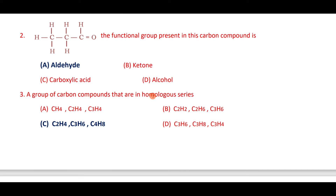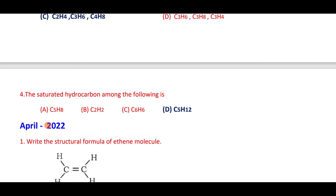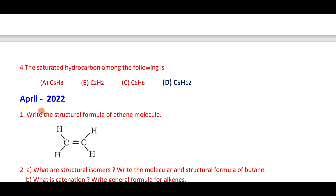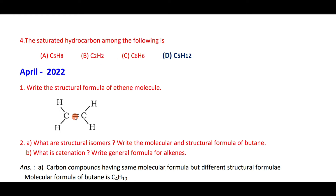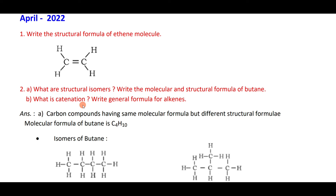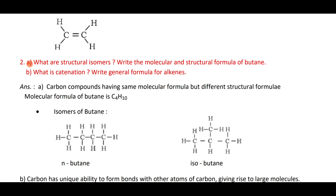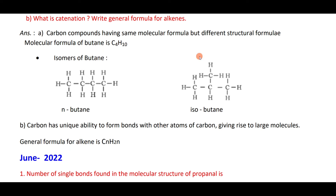In a homologous series, the difference between successive members should differ by CH₂ — option C. Catenation: carbon has a unique ability to form bonds with other atoms of carbon, giving rise to large molecules. The general formula of alkenes is CₙH₂ₙ. The number of single bonds in the molecular structure of propanal is eight.